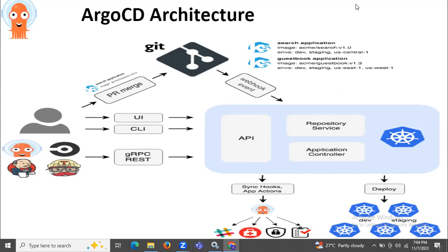In this session we will talk about ArgoCD Architecture. ArgoCD consists of three main components: first, the API (ArgoCD Server), then the Repository Server, and the Application Controller. So those are the three main components of ArgoCD: API, Repository Service, and Application Controller.